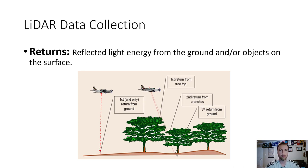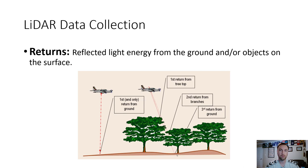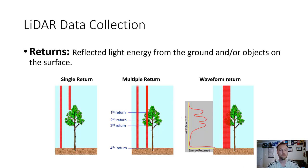Returns are reflected light energy from the ground or objects on the earth's surface — natural objects like trees, mountains, and rivers, or man-made objects like buildings. An 'only return' occurs when the pulse hits nothing but bare earth. A first return would be a treetop or rooftop; second return would be branches beneath the canopy; third return might be the ground or shrubs below the tree canopy. First, second, third simply implies the first, second, and third time the pulse hits an object.